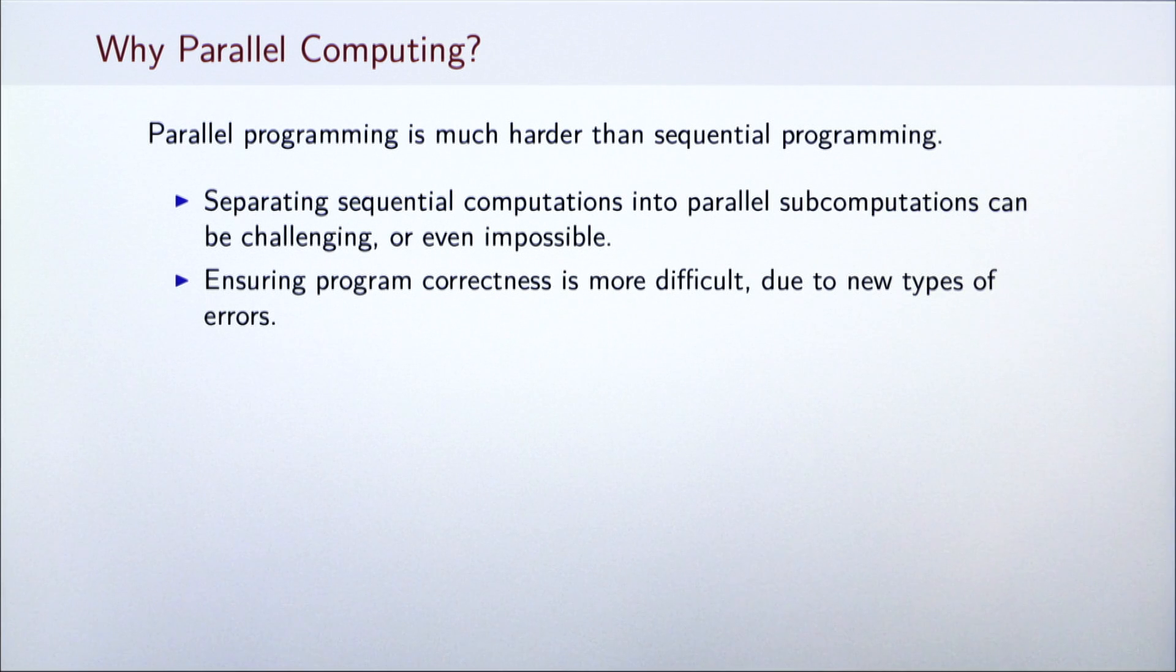The second source of difficulty is ensuring correctness. We will see that many new types of errors can arise in parallel programming, making the programmer's life harder. With these increased complexities, why then would we bother writing parallel programs at all?